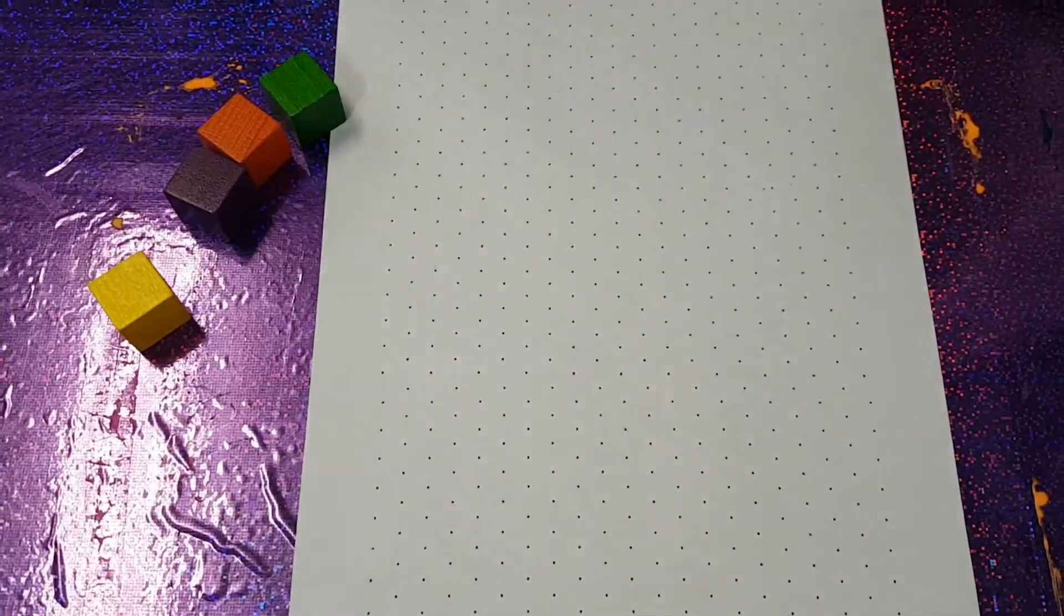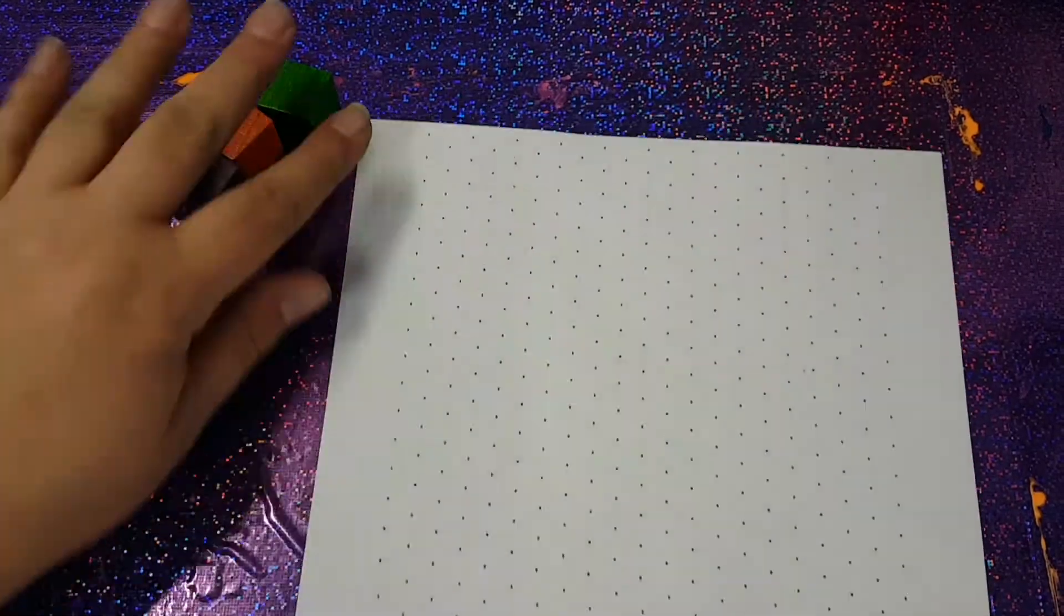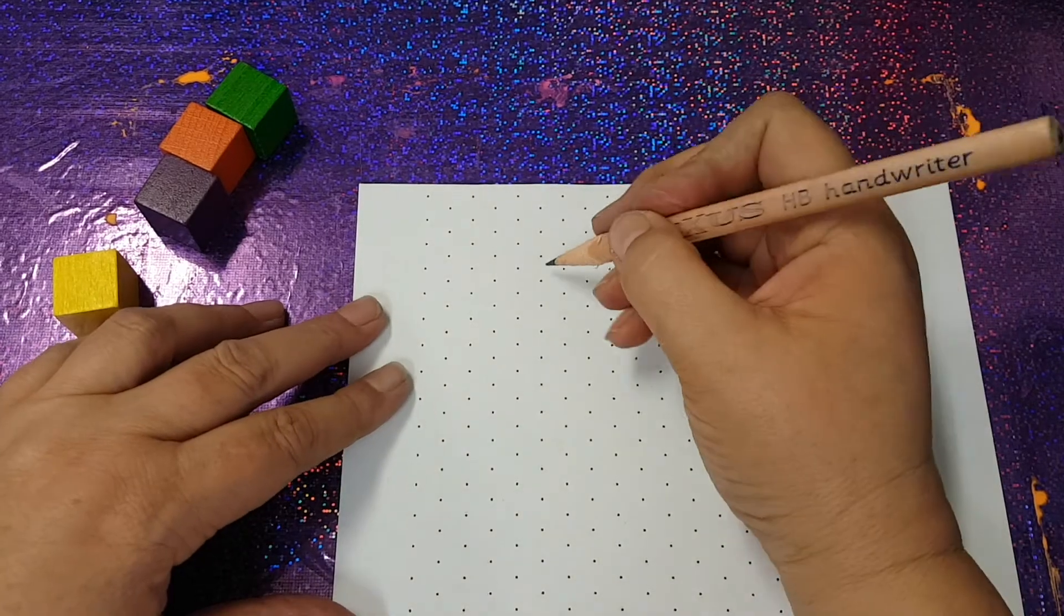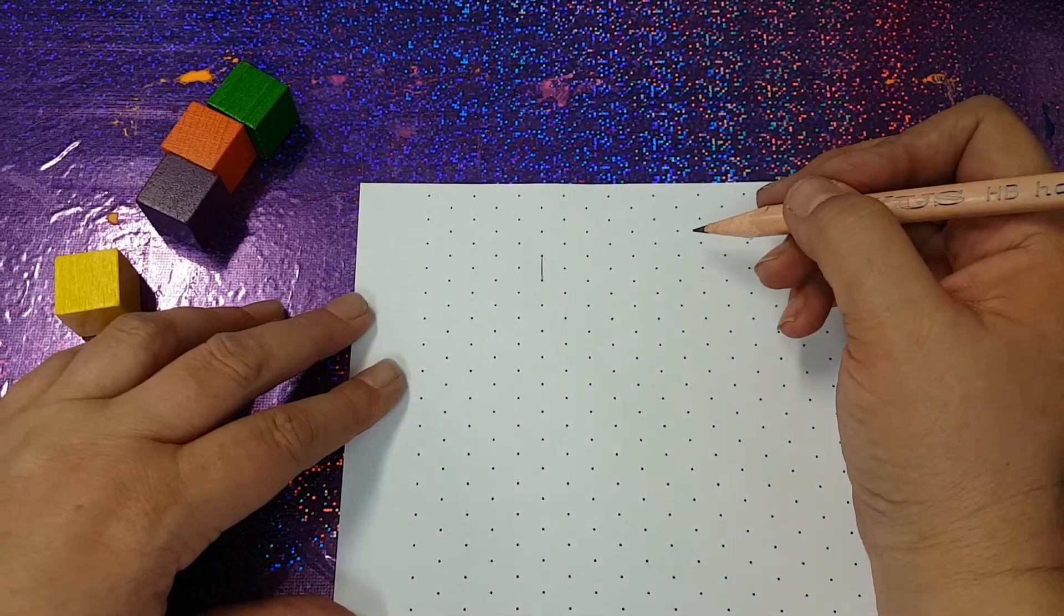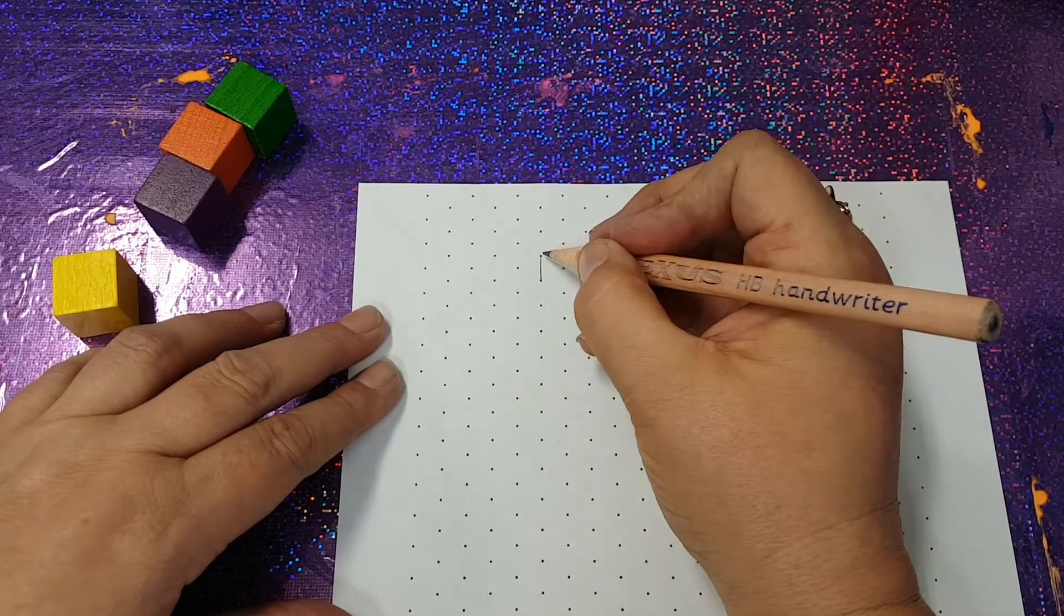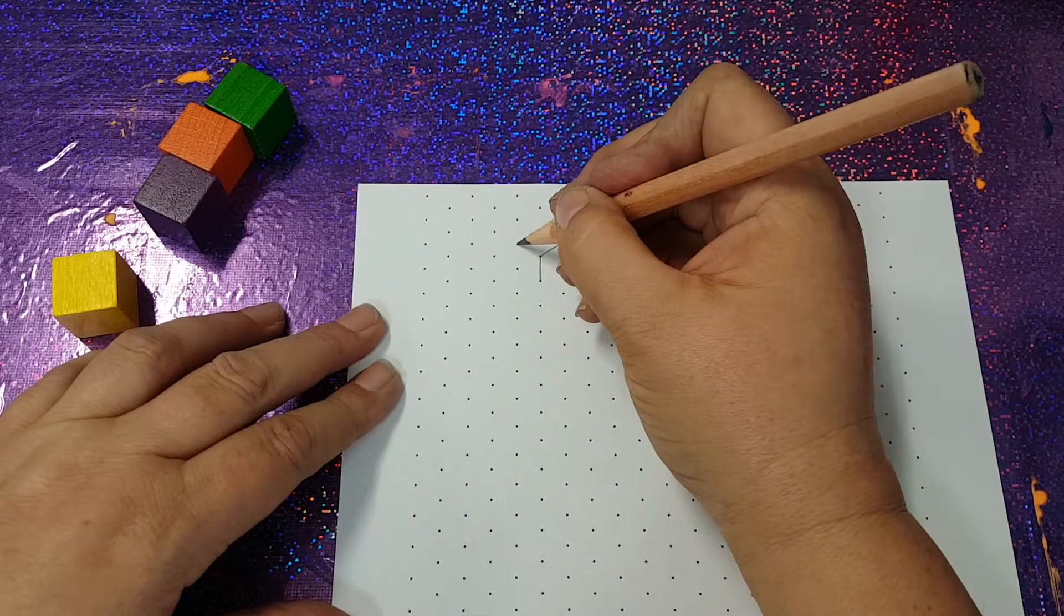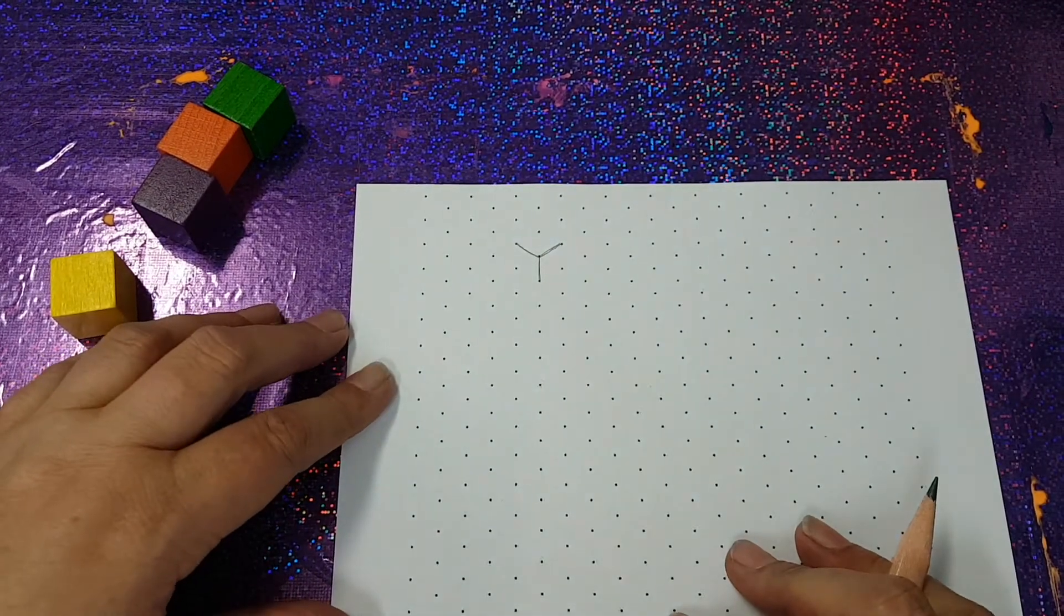First of all you need your paper sitting portrait and starting up near the top we're going to start off showing you the basic way to draw a cube. A little way down from your paper join up two dots going vertically. And then you're going to move up to a dot there and up to a dot here. So you've made a Y.